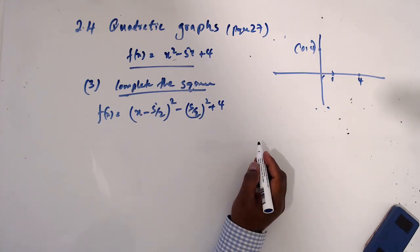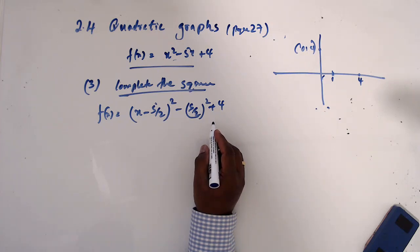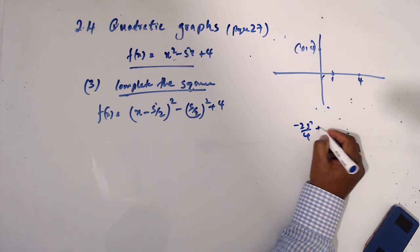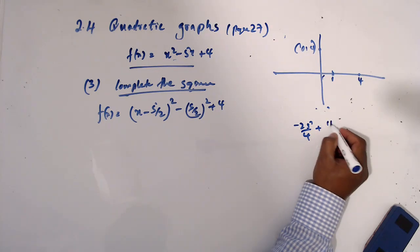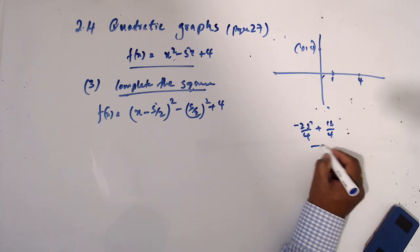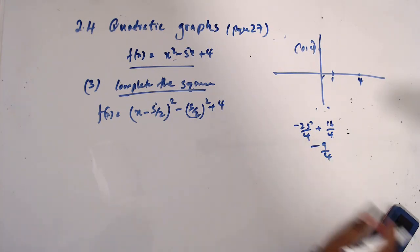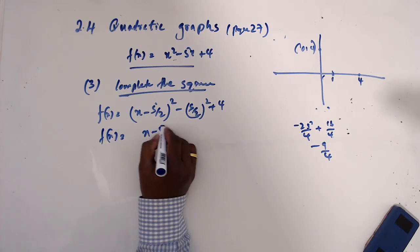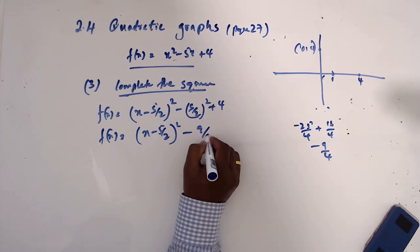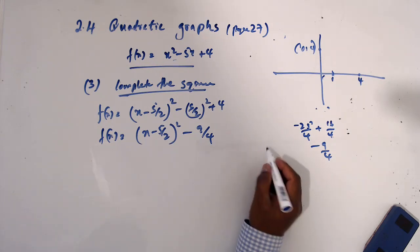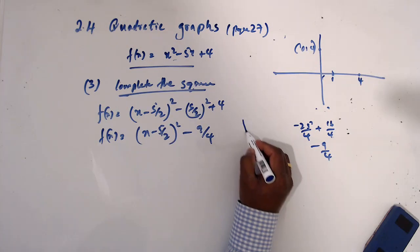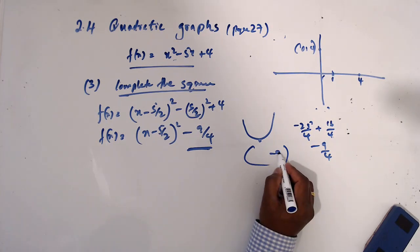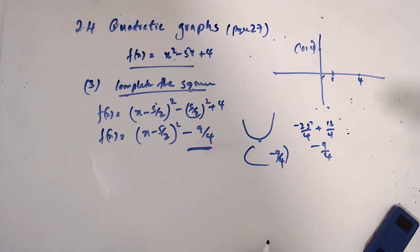So when we simplify this one: 25 over 4 plus 16 over 4 minus 9 over 4. So then I'm writing f(x) equals (x minus 5/2) squared minus 9/4. Now in this turning point, I know one coordinate, the y of this one, that is minus 9/4.